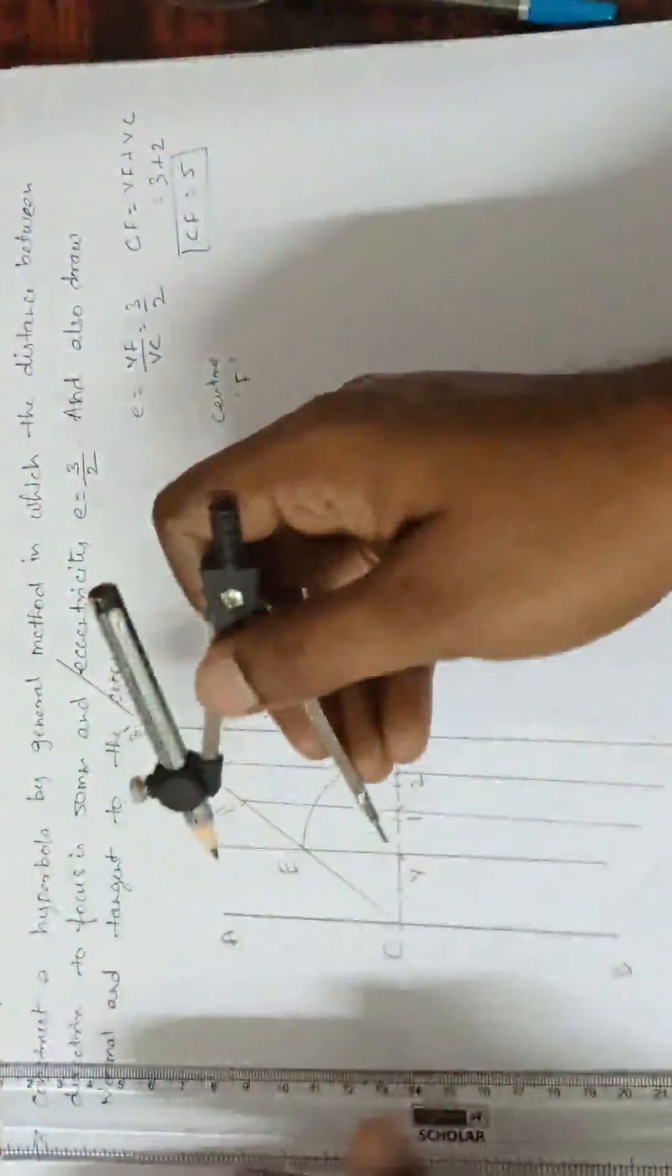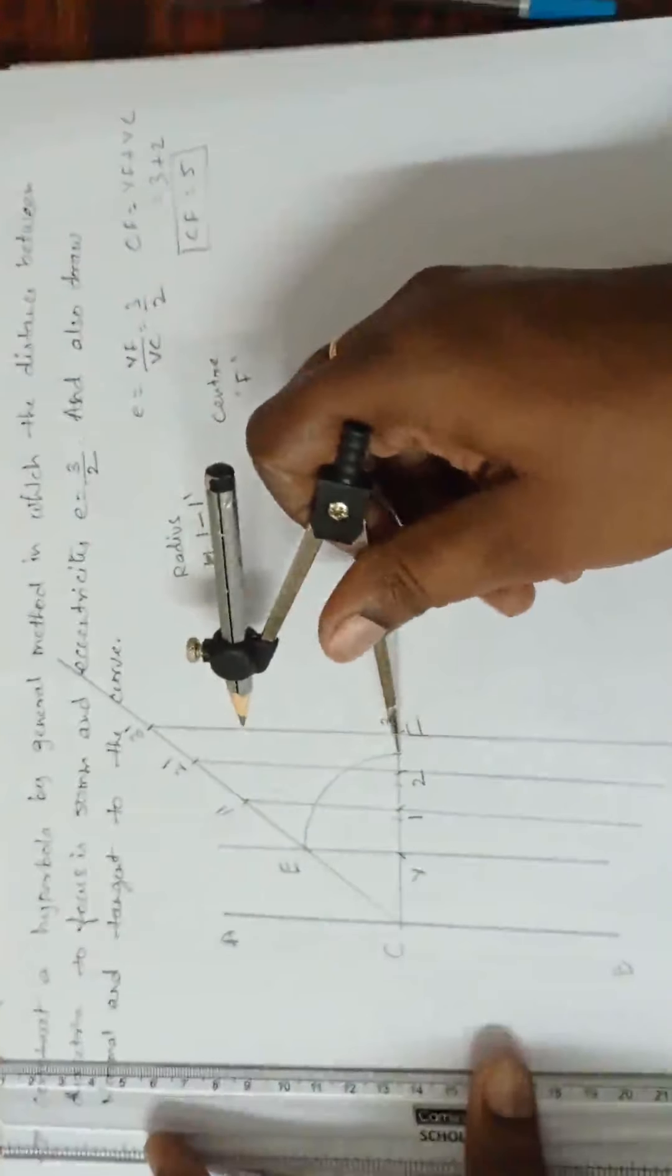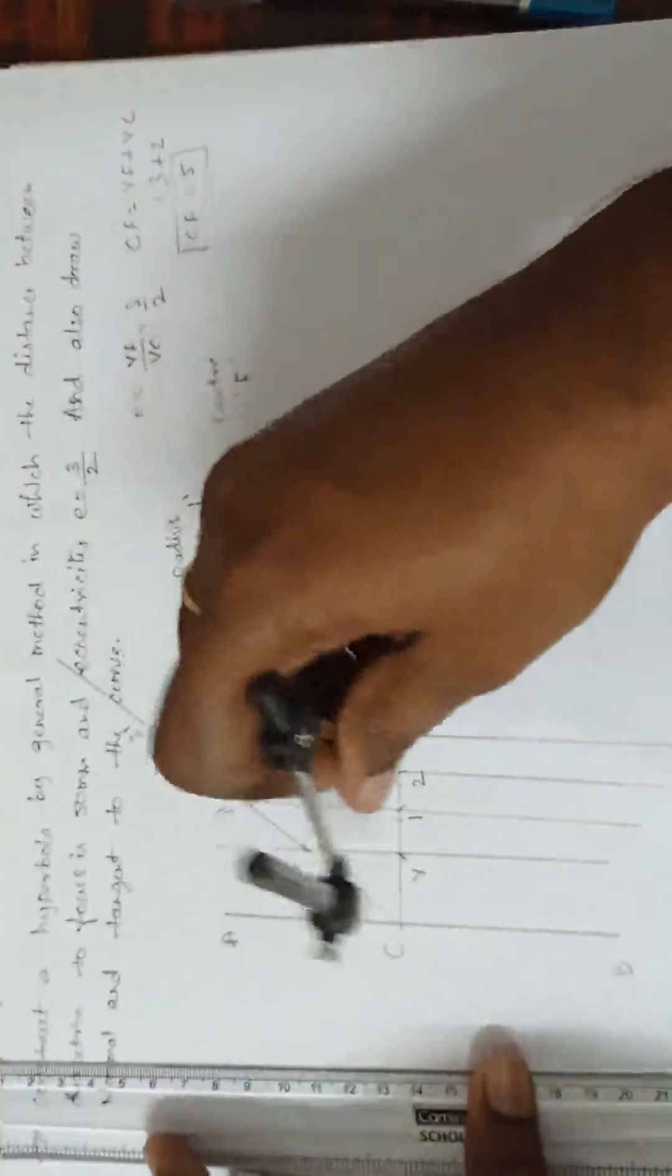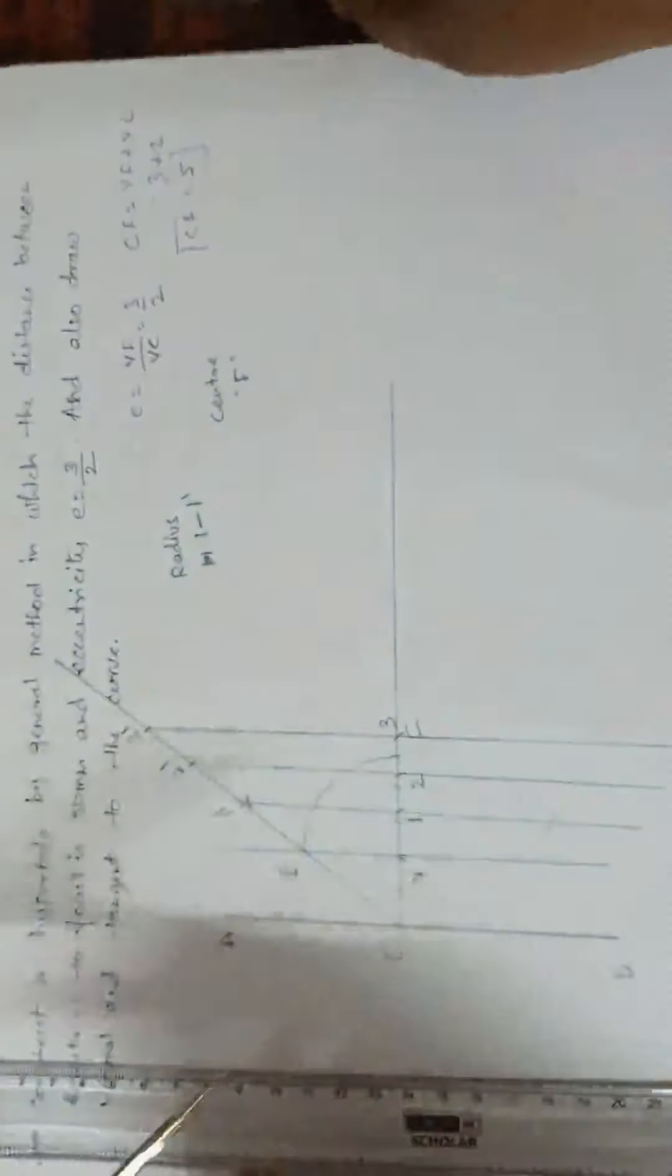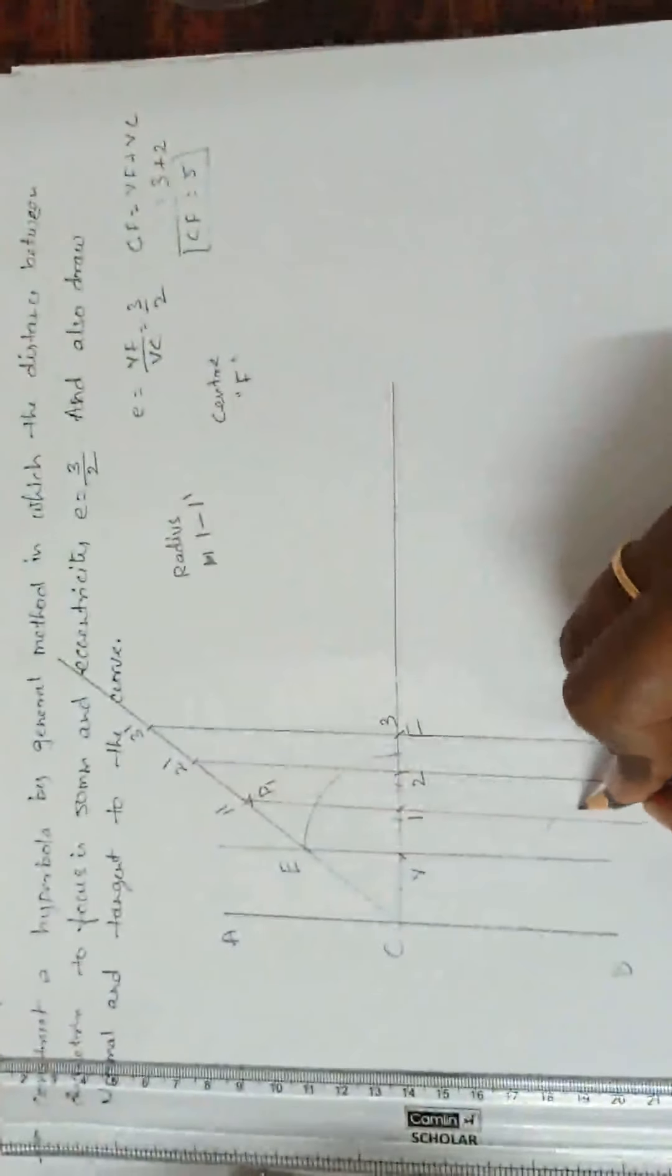Take radius 1, 1 dash. Focus as center. See, this is our focus. Cut here. Cut the first line 1, 1 dash. And call it as this is P1 and P1 dash.